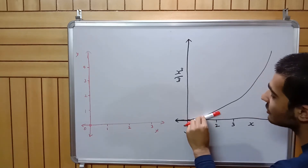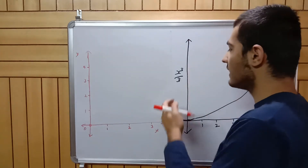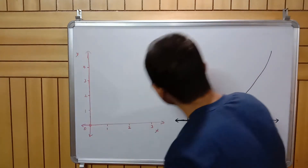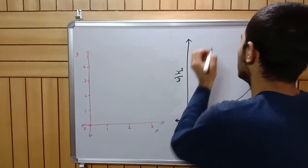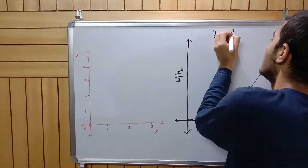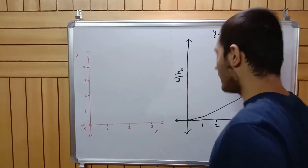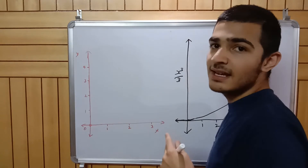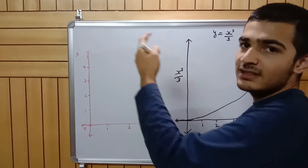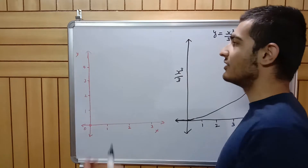At x equals one, I draw a tangent. How do I find the slope of this tangent? One way is: the function here is y equals x cubed by 3. If I differentiate this I get its derivative at every point, and using that I can find the slope of the tangents.